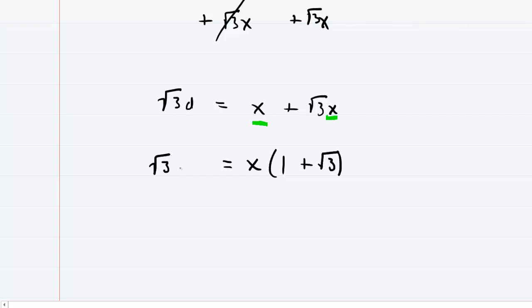This equals radical 3 times d. And finally, we divide both sides by 1 plus radical 3. And this will give us the expression for x. So it's going to be the square root of 3 times d over 1 plus the square root of 3.